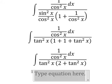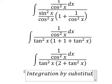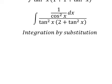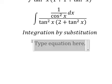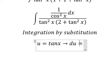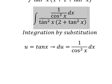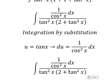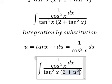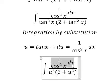Next we need to use integration by substitution. We put u equals to tan x. Then du equals one over cosine x squared dx. So this one we change for u squared, and this one we change for u squared, and this one we change for du.